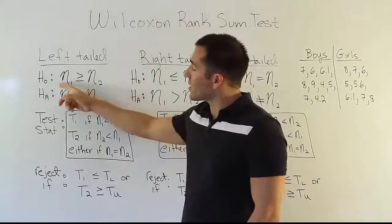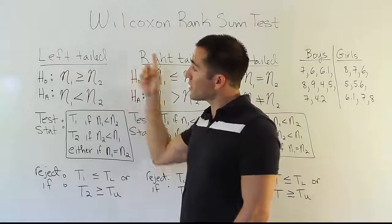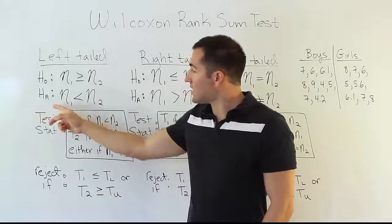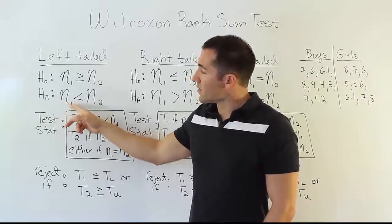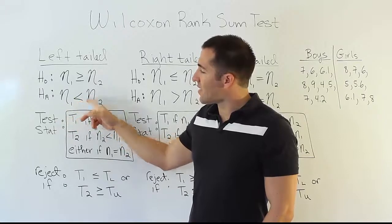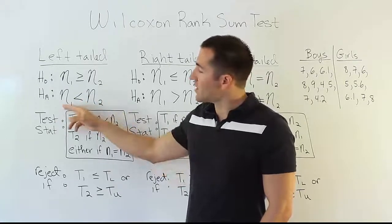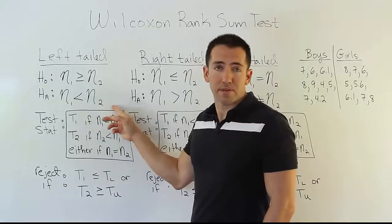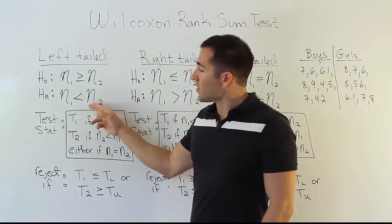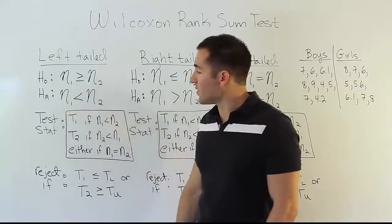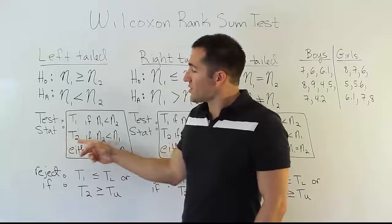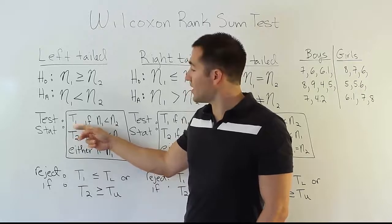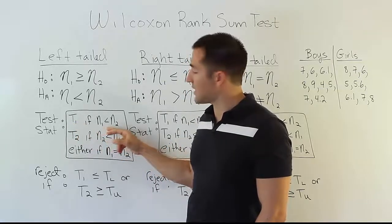I have an H0 and an HA here that talk about the medians. Non-parametric tests often discuss the median location. The left-tail test comes from the HA statement, and it says that the median for the first population is less than the median for the second population. In this scenario, that would be saying that essentially the boys' jump distances are smaller than the girls' jump distances, because the median for the girls would be higher than that for the boys.